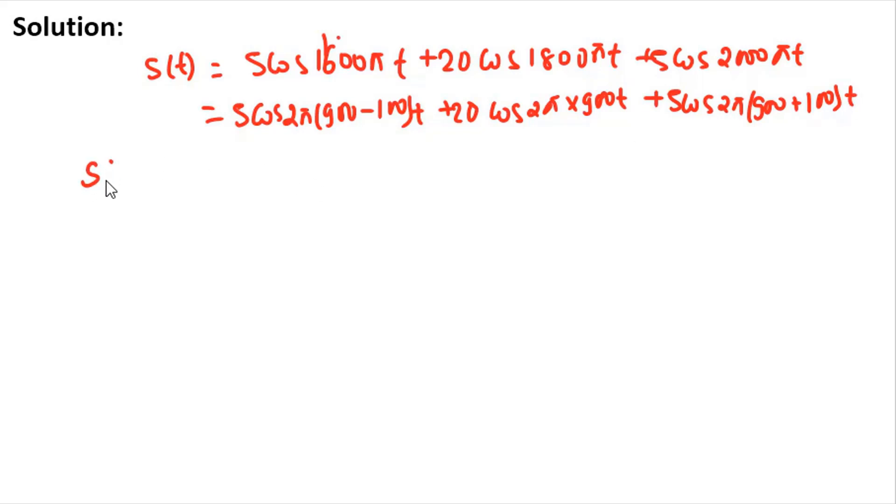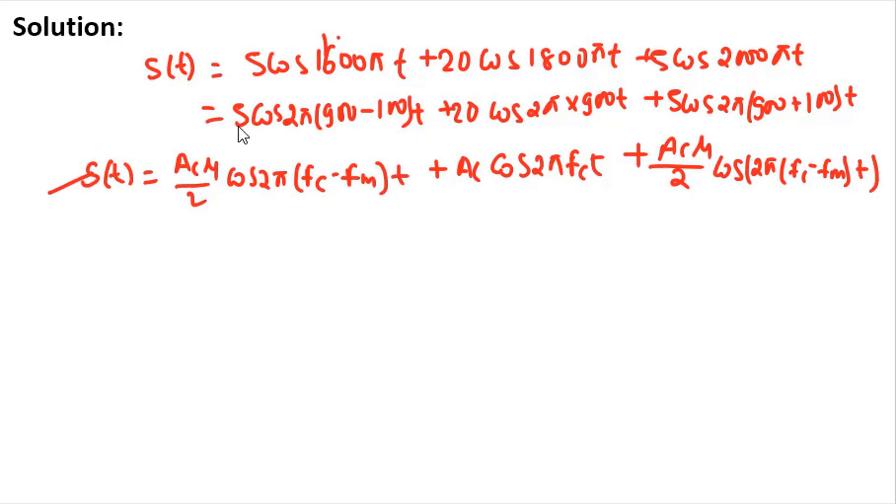By comparing the general expression of amplitude modulated signal, which is Ac μ by 2 cos 2π(fc minus fm)t, by comparing this s(t) with this expression as given in the question, you get Ac μ over 2 equal to 5 and Ac equal to 20.